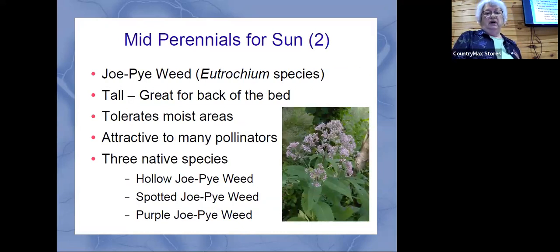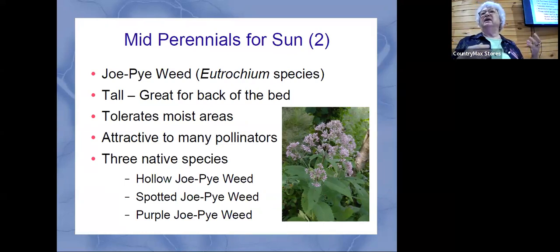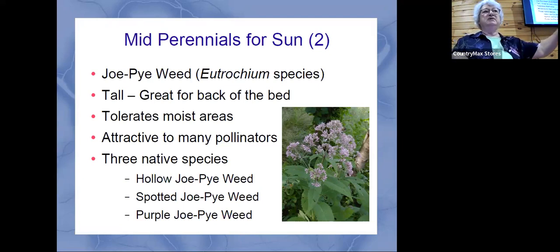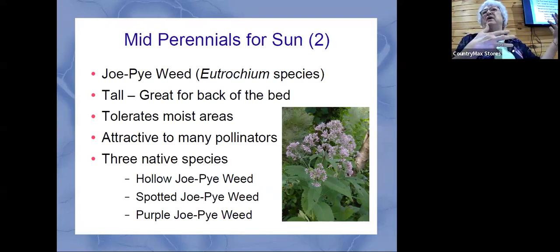Joe Pye weed is a nice plant but it gets quite tall — it can get like seven feet. A lot of the native plants get very tall. That's a particular thing you need to pay attention to: how tall are they going to get? Tall plants go in the back, then something four feet tall next to them, and then in front you plant your low plants and ground covers. If you plant a tall one in front, it's going to shade out and block what's behind it.